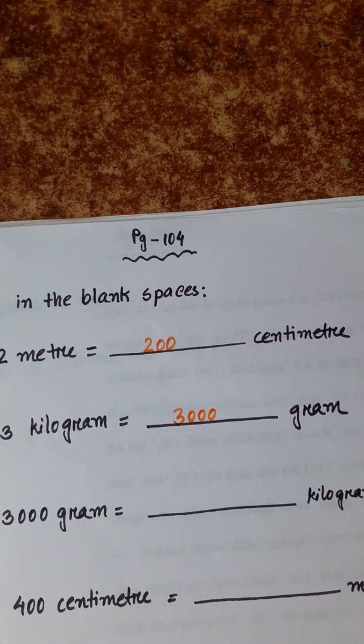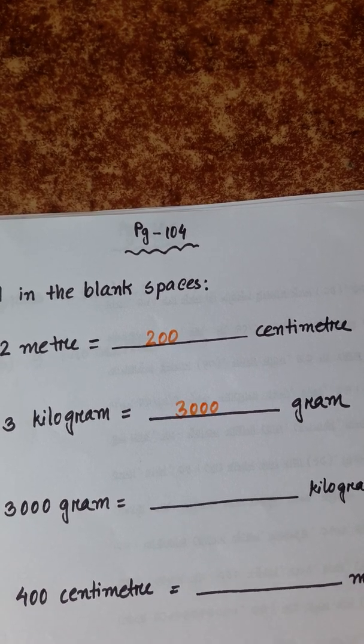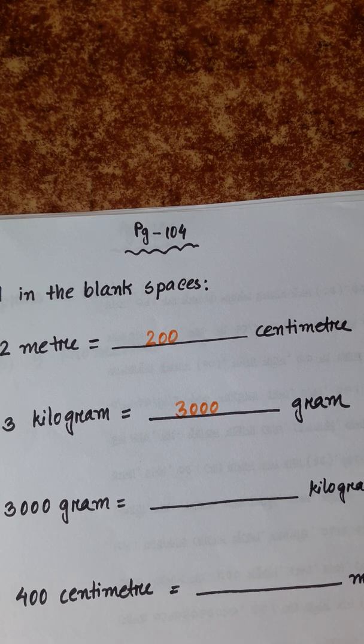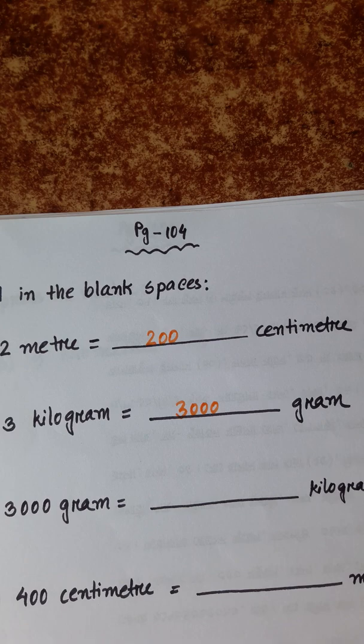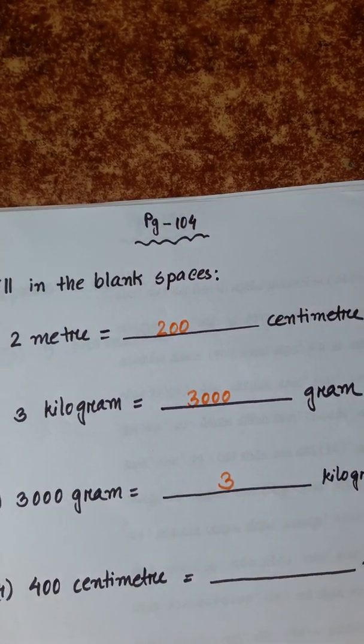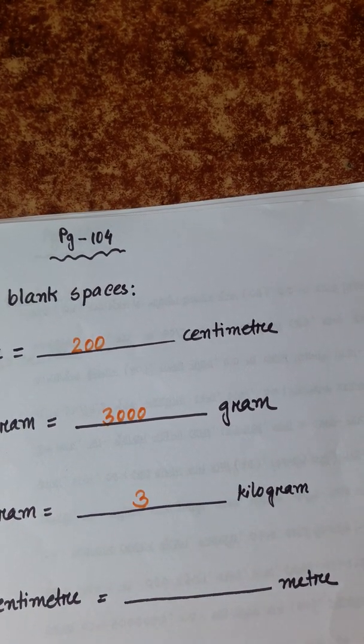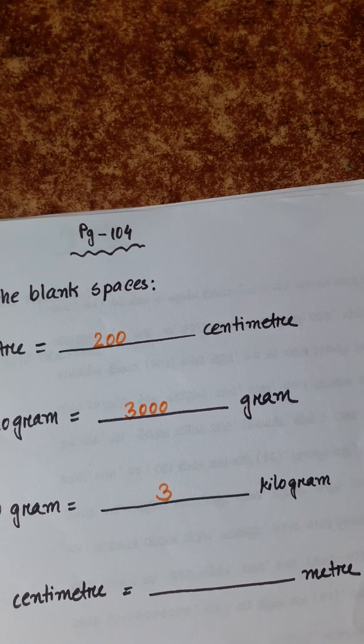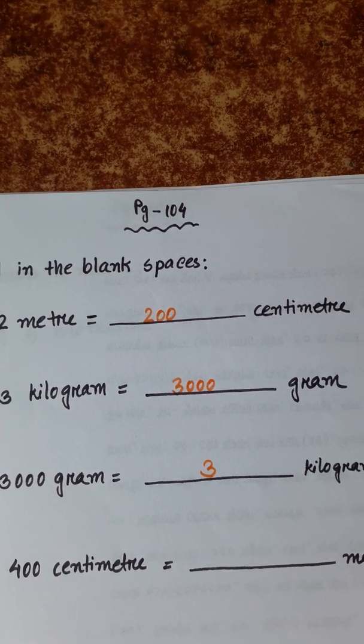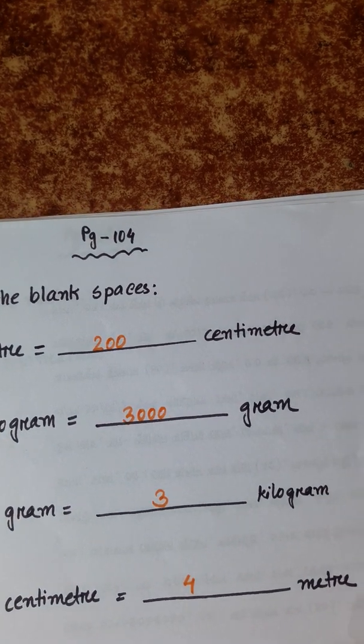3000 gram is equal to dash kilogram. As 1 kilogram is equal to 1000 gram, so 3000 divided by 1000 is 3, so 3 kilogram. 400 centimeter is equal to dash meter. 1 meter is equal to 100 centimeter, so 400 centimeter is equal to 400 divided by 100 is equal to 4, 4 meter.